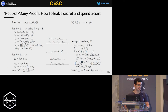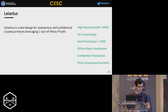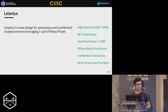This is the design of the one out of many proof construction — the proof and verification procedures fit in a simple one-page diagram. Lelantus leverages this technology to build a new protocol for anonymous and confidential transactions, which supports fast batch verification, enables direct anonymous payments, and is also compatible with MimbleWimble and confidential transaction protocols, and potentially also with RingCT used in Monero.